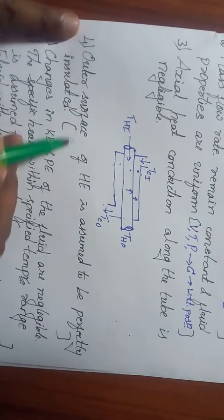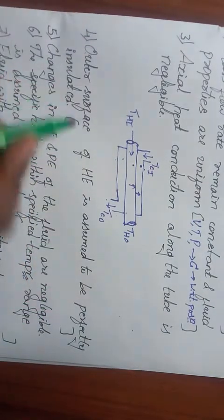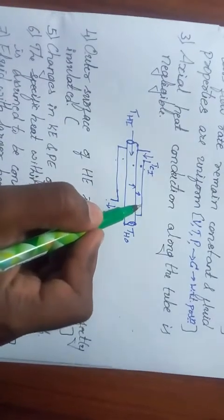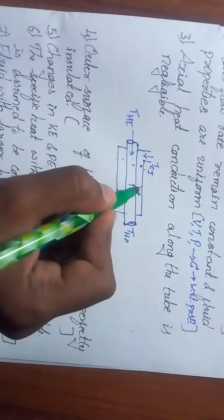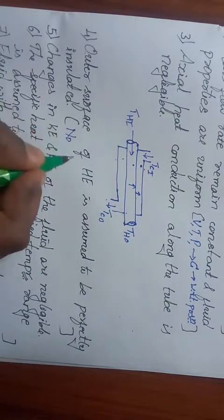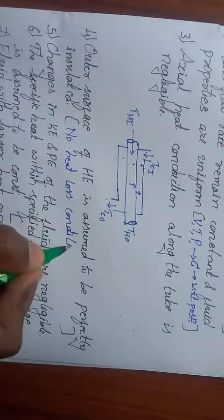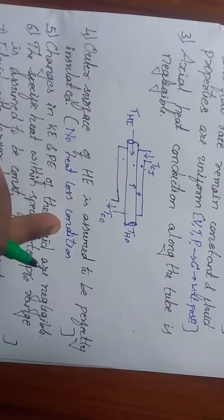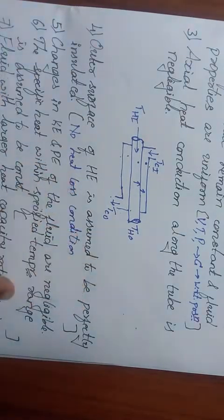Coming to the fourth point: the outer surface of heat exchanger is assumed to be perfectly insulated. That means the heat which has reached the outer surface - from here it says the surface is insulated, which means from here there is no heat transferred into the surrounding. That means there is no heat loss condition. It speaks about heat loss condition - there is no heat loss, that is what perfectly insulated means.